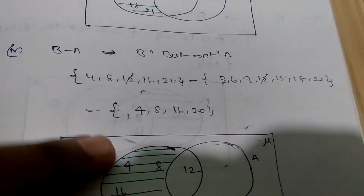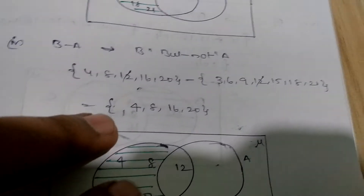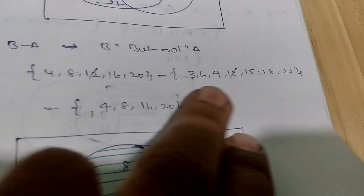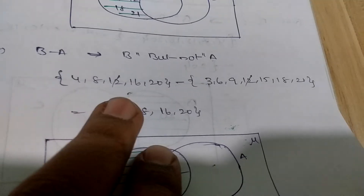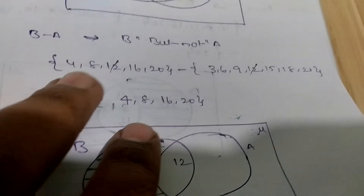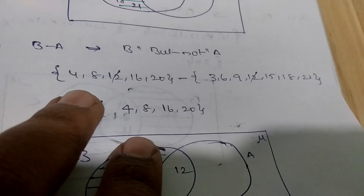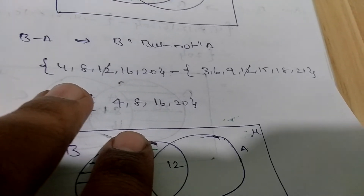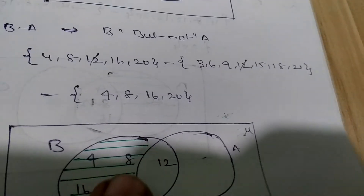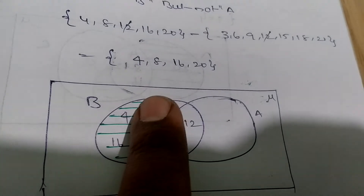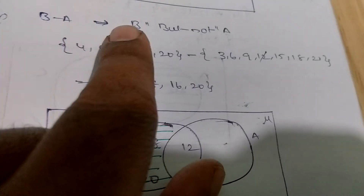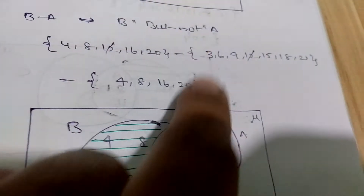Now B minus A means B but not A. The sets given are multiples of 4 and multiples of 3. In this also, element 12 is repeated, so strike that. The elements left in set B are 4, 8, 16, 20. Mention only those elements under the only-B region, because we are talking about B minus A — that indicates B but not A.